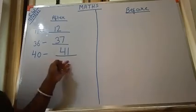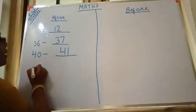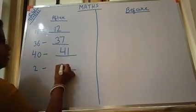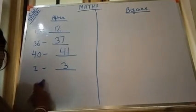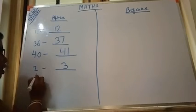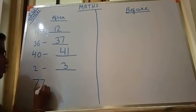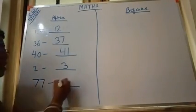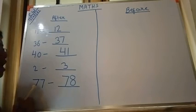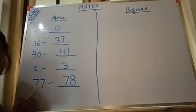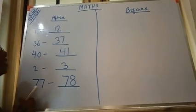41 comes next to 40. Likewise, the after number of 2 is 3 — because 3 is the next number of 2. After that, suppose the number is 77. What is the after number of 77? It will be 78, because 78 comes just after 77. That's why the after number of 77 will be 78.